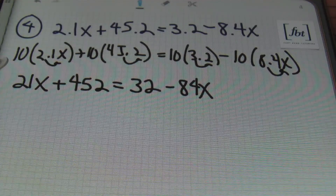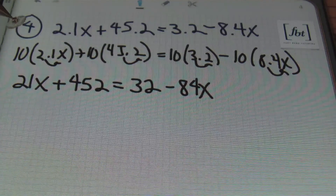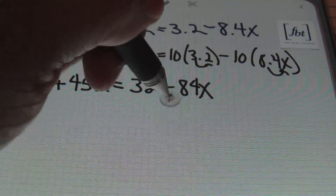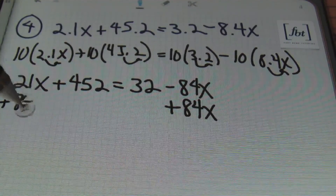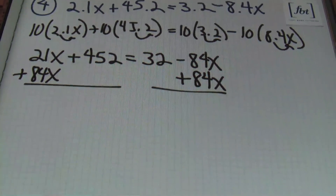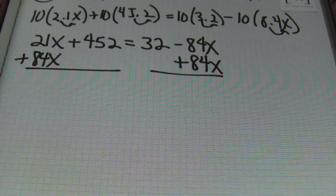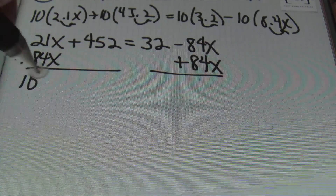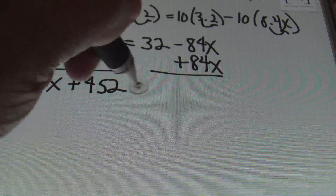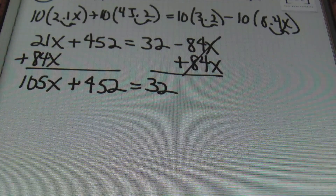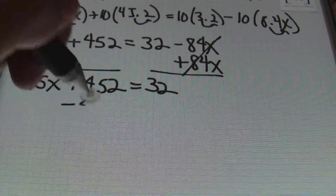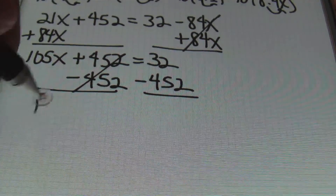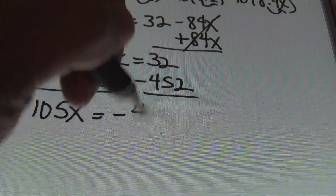Notice how this looks a lot more appealing — no decimals. Now I'll start by isolating the terms with variables by adding 84x to both sides. Speed is not your friend, so take your time — a slow right answer is better than a fast wrong answer. On the left side: 21x plus 84x gives me 105x, plus 452, which equals 32. Those additive inverses cancel out. Then I'll subtract 452 from both sides. The 452s cancel out, leaving 105x equals negative 420.